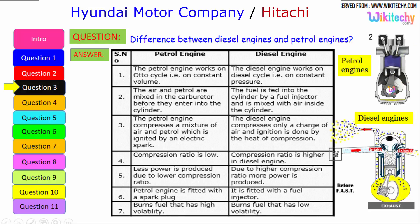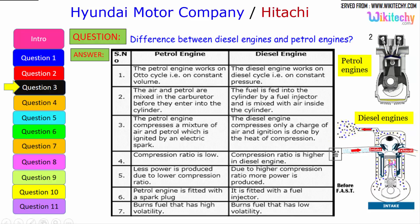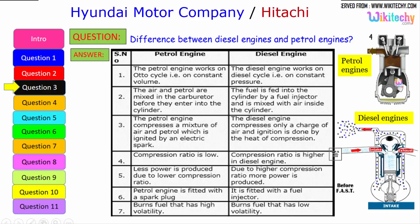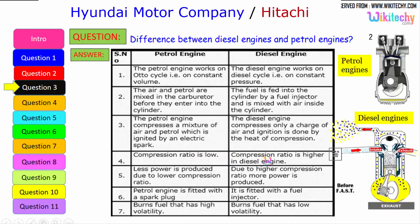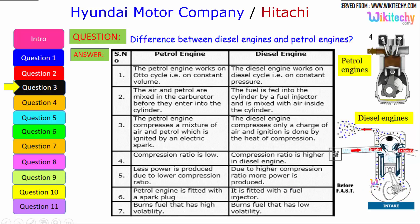The petrol engine compresses a mixture of air and petrol, which is ignited by an electrical spark. The diesel engine compresses only a charge of air, and ignition is done by the heat of compression. The petrol engine has a lower compression ratio, producing less power, whereas the diesel engine has a higher compression ratio, producing more power.